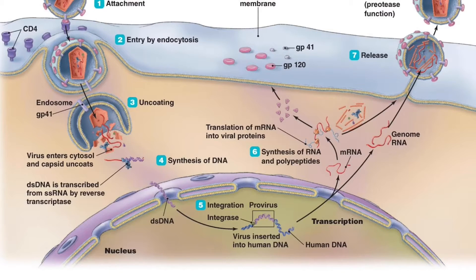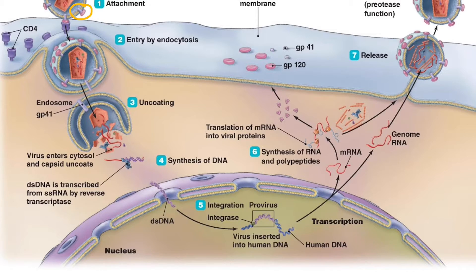Let's look at this more visually. Up at the top you can see the HIV virion — it has glycoprotein spikes, which is typical of an enveloped virus. The spike is actually made up of two different proteins: the disc-shaped component at the very surface is called glycoprotein 120, and the post that keeps it anchored in the membrane is called glycoprotein 41.